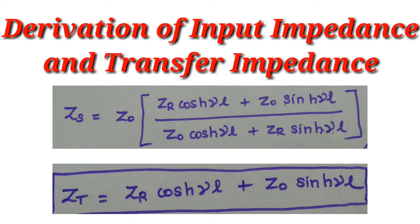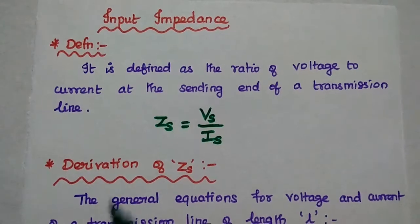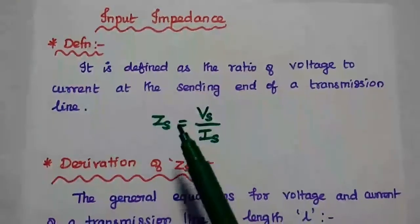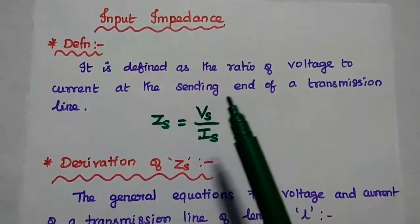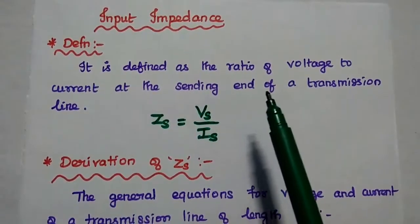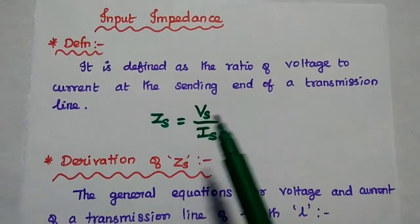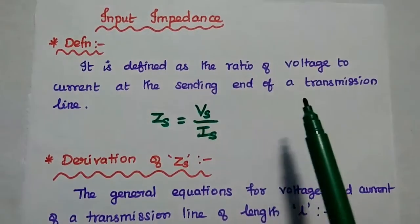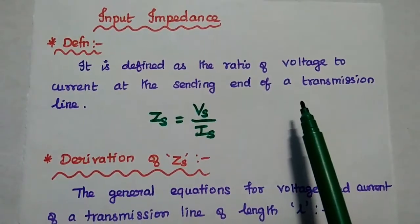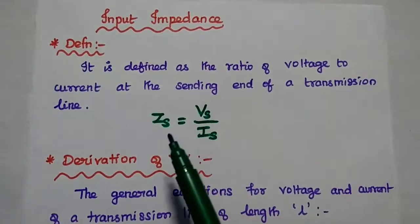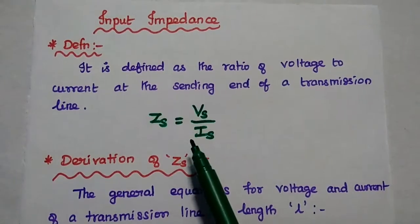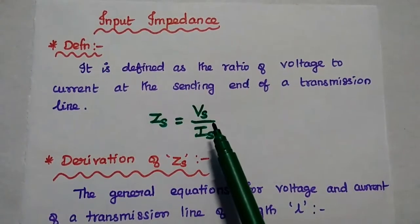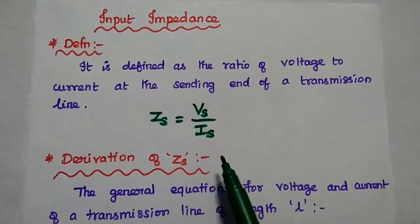Now we are going to derive input impedance and transfer impedance of the transmission line. Input impedance is defined as the ratio of voltage to current at the sending end of a transmission line. It is denoted as Zs, which is equal to Vs divided by Is.